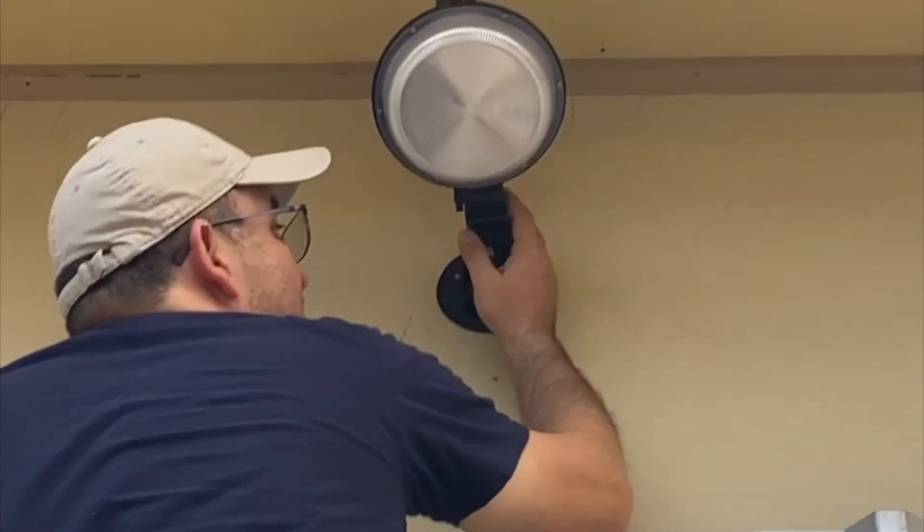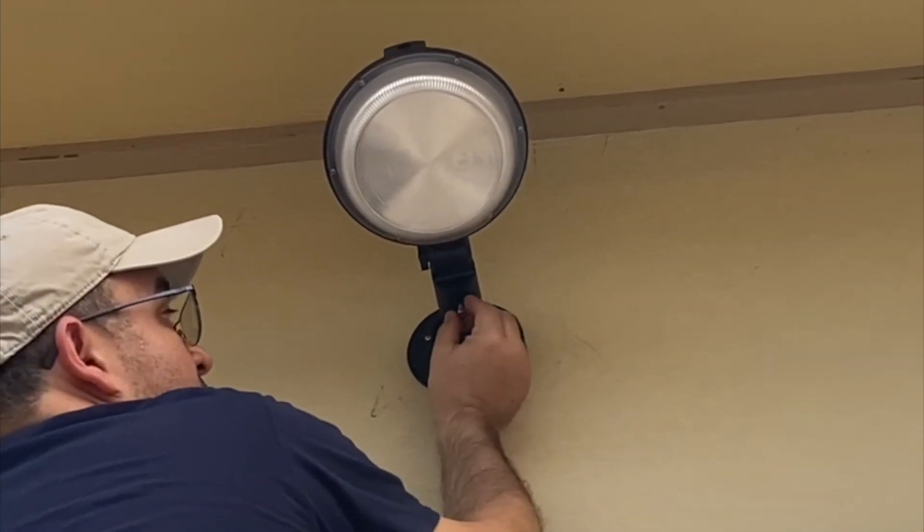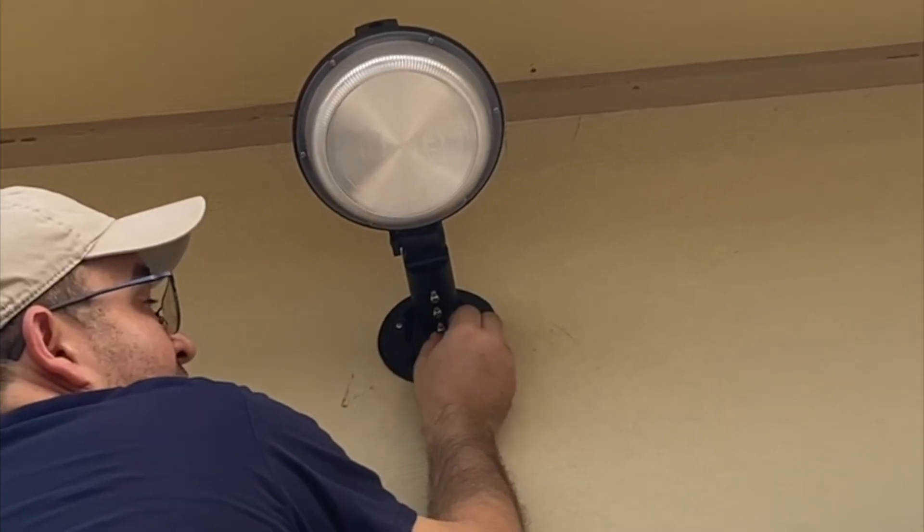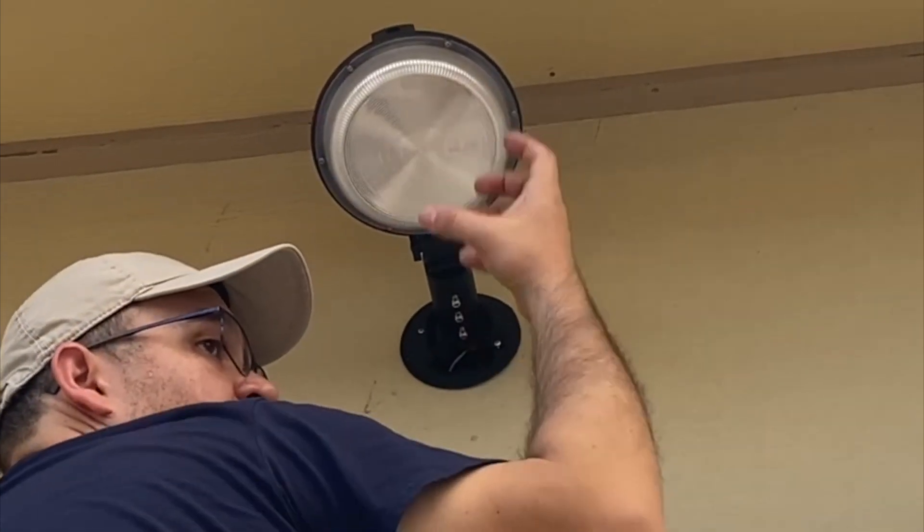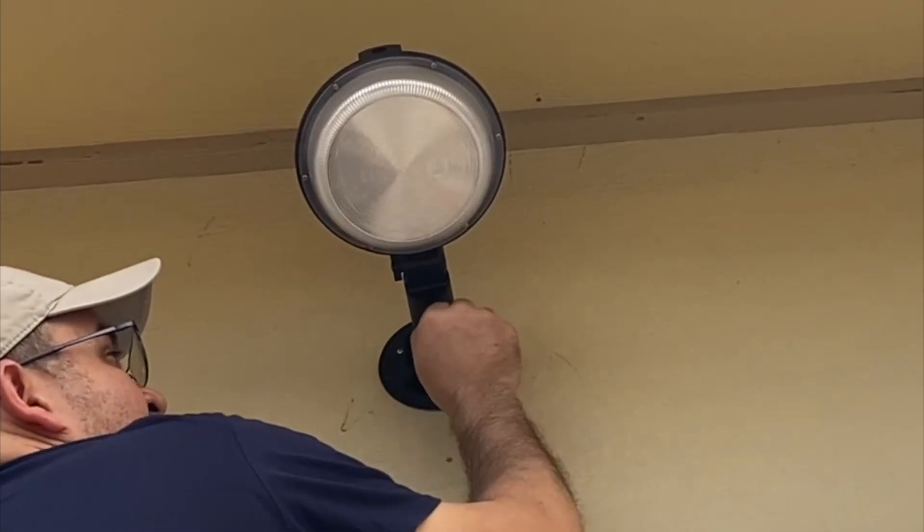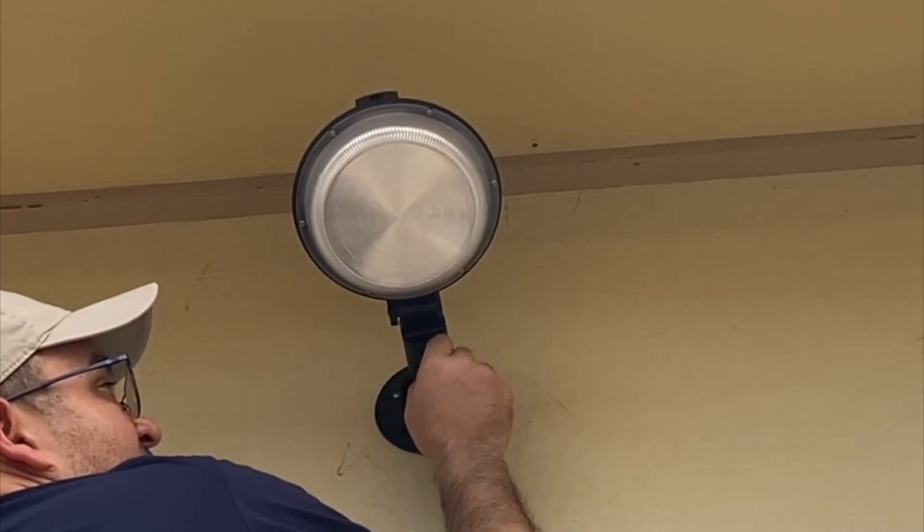These screws that it shows are in the case that you want to install this lamp on a pole, but in this case, we didn't use them.